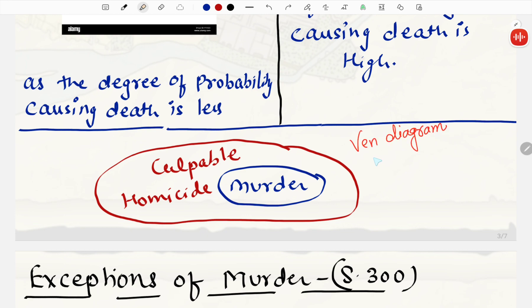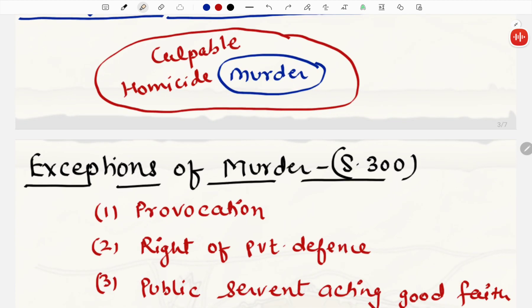There are many more dimensions which actually differentiate between culpable homicide and murder. But we are just discussing about the degree of intention right now. All the murders come under culpable homicide. Jitne bhi murders ho rhe hai, woh sare culpable homicide ke andar aate hai. Lekin sare culpable homicide murder nahi hoti hai. If you are still facing difficulties, you can ask me. I will explain all these things again.